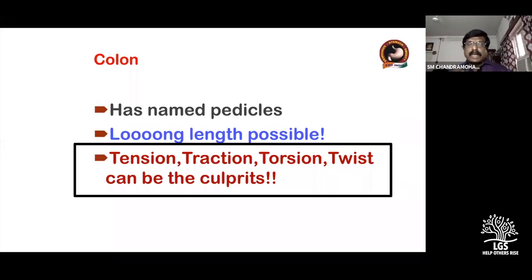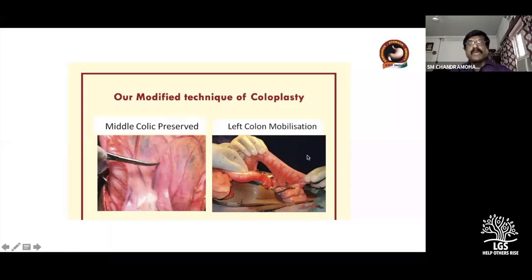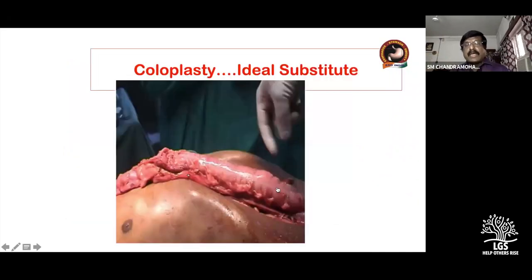When taking a tubular structure through the abdomen, chest, and up to the neck and pharynx, remember: there should be neither tension in the bowel nor tension in the artery or vein; you should never pull it; there should be no traction; and when you take it through the chest wall there should be neither torsion nor twist. All these can be culprits for ischemia or conduit necrosis, and are more common with colon than with stomach.